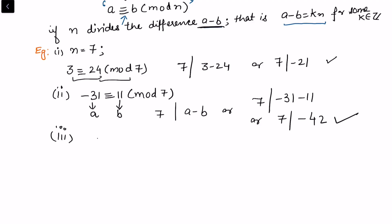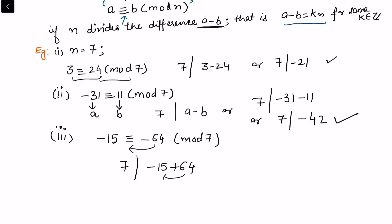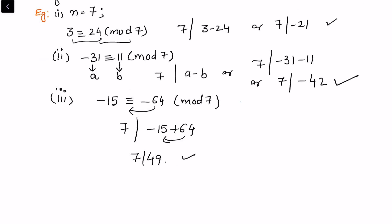In another example, take minus 15 congruent to minus 64 modulo 7. We need 7 to divide minus 15 minus (minus 64), which gives minus 15 plus 64, equal to 49. Since 7 divides 49, this is also true.